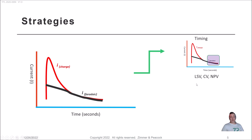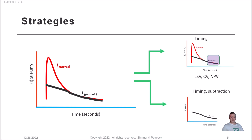That first strategy — timing — is what they do in linear sweep voltammetry, cyclic voltammetry, and normal pulse voltammetry. The second strategy is timing and subtraction. The first part is similar: you delay the recording of current to let the charging current dissipate and be left with the Faradaic current. But additionally, you perform a subtraction on the signal as well.